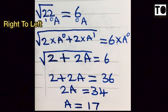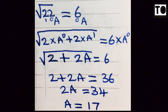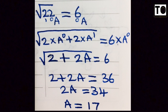If you want to solve the number, the place value on the right side is 0 and the left side is 1. So for root 22, the first digit from the right has place value 0, and the second digit has place value 1.